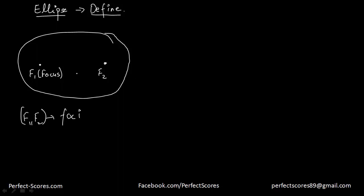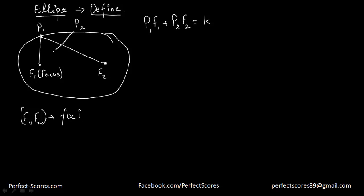Now, what's the importance of these points? If I pick up any point on the ellipse — let's say this point is P1 — the distance of P1 from F1 plus the distance from P1 to F2 is going to be constant. So P1F1 plus P1F2 is going to be equal to some constant, and that is going to be true for every point on the ellipse.